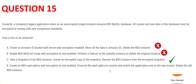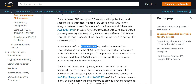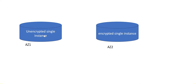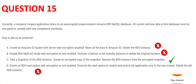Option D says create a read replica with encryption enabled, promote the read replica to master, switch the application to it, and delete the old instance. But you do not create a read replica to encrypt — the thumb rule is you create a snapshot and encrypt it. Also, if the original database is unencrypted, the read replica will also be unencrypted, using the same KMS key as the primary. You cannot create an encrypted read replica from an unencrypted primary database. So D is wrong and C is our final answer.